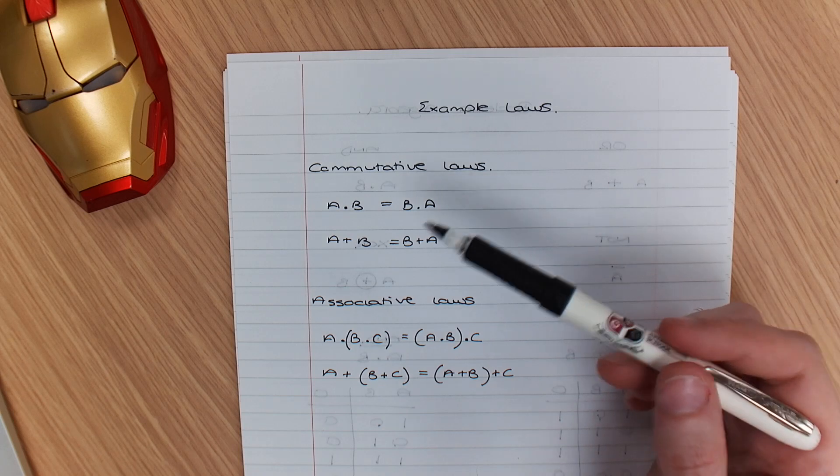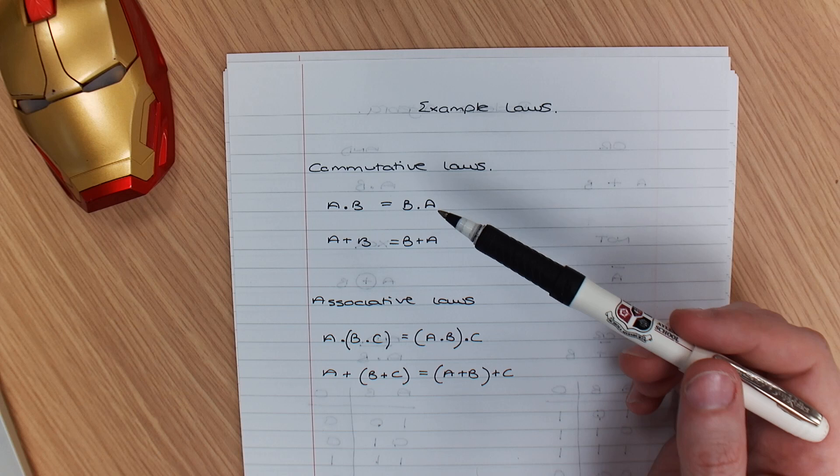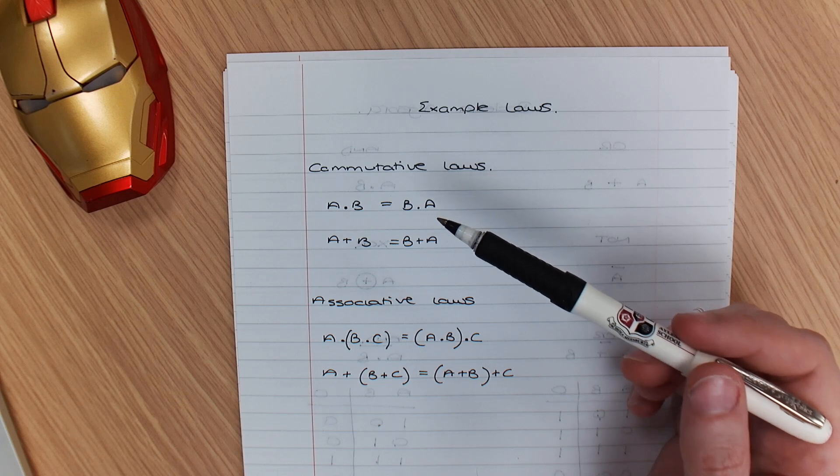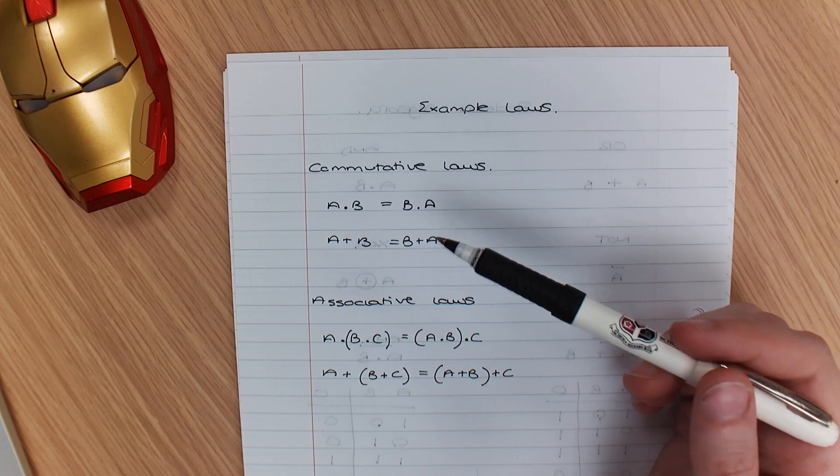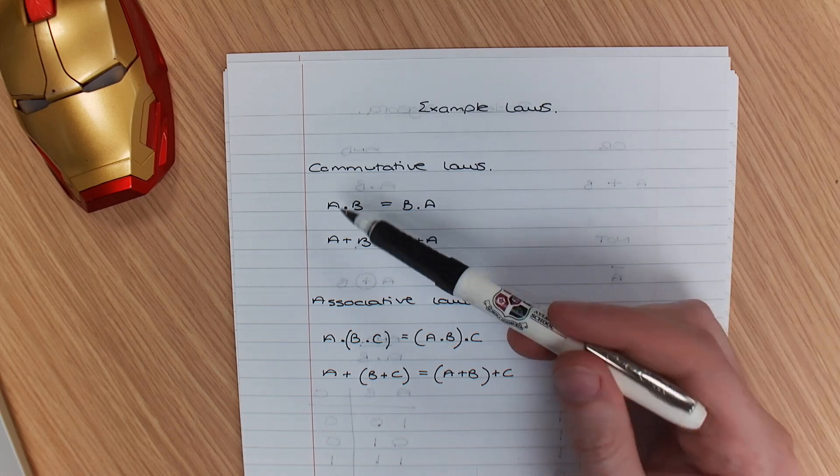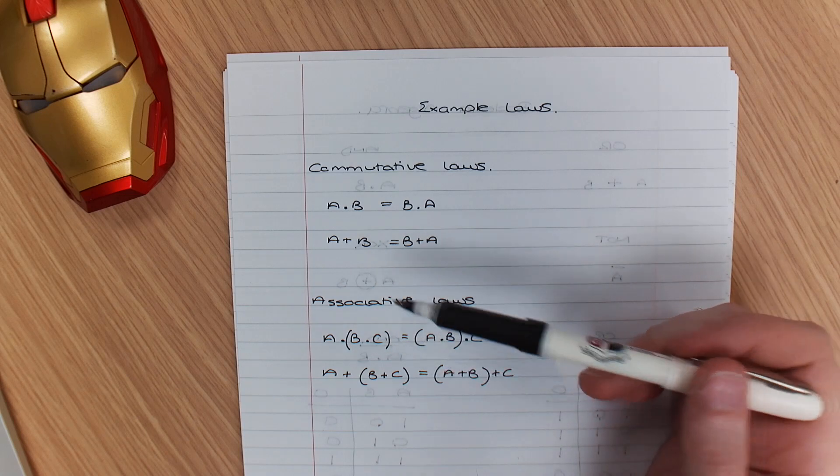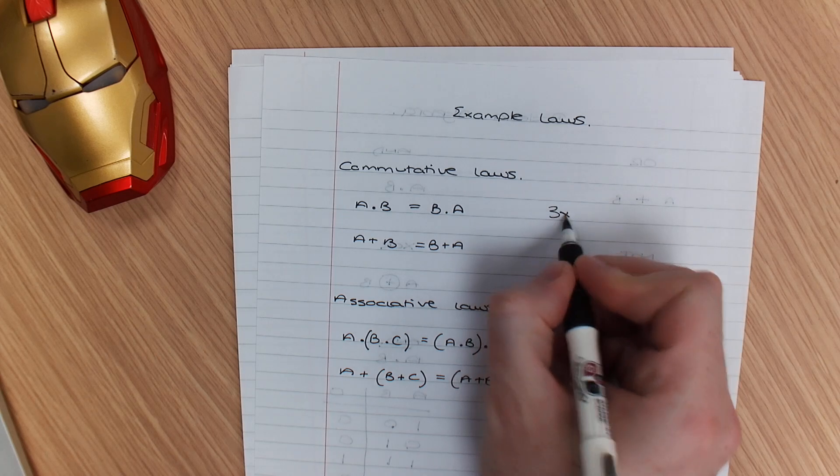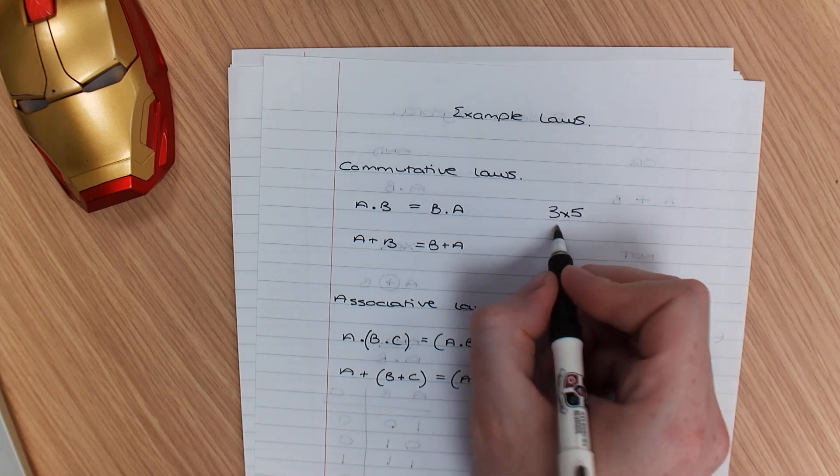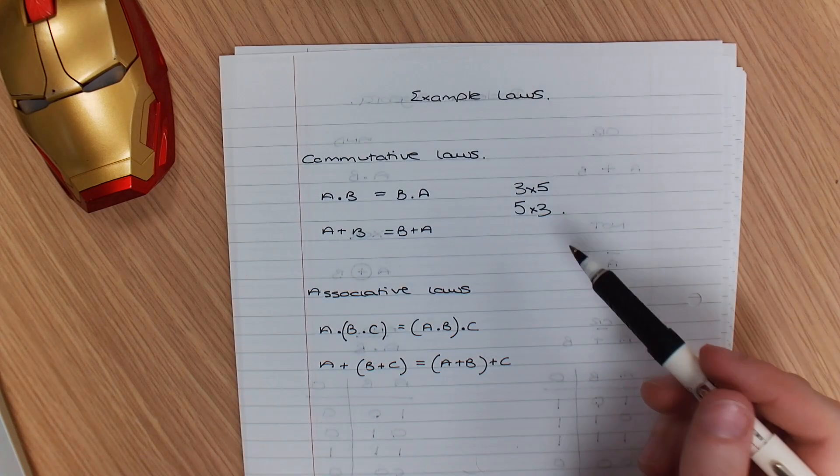You will need to think about this when you are putting together or simplifying your Boolean algebra. These laws state that the order of operands does not matter. For example, you may have seen this in maths - if you have 3 times 5, it is exactly the same as 5 times 3.